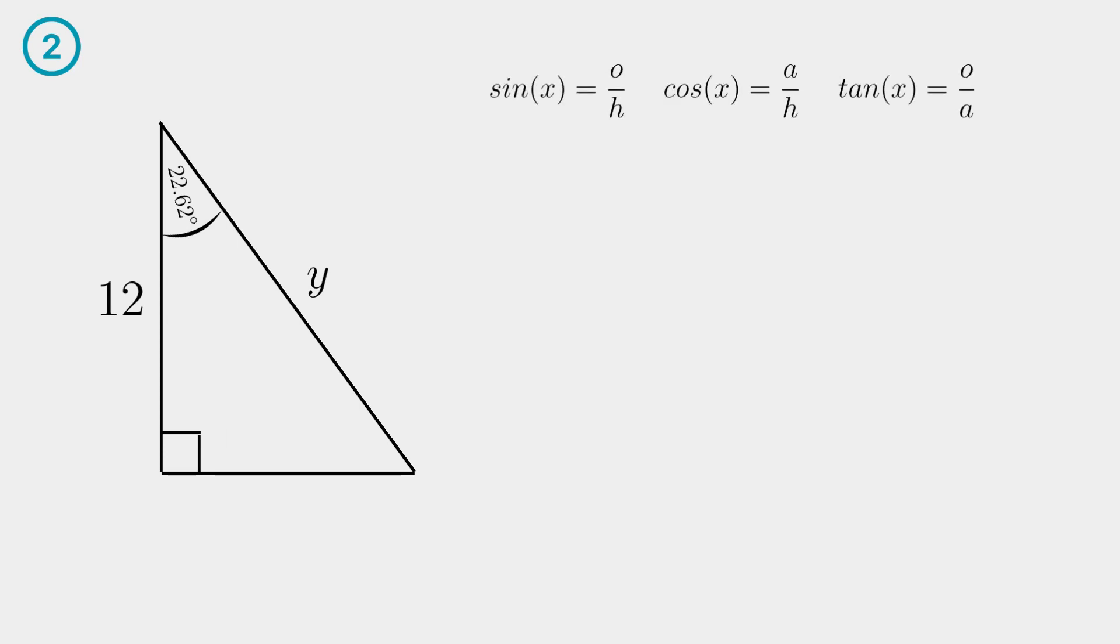Second example. Calculate the side length Y. We have a right angle triangle so we can use the three basic trig functions. The side adjacent to the twenty two point six two degrees angle is twelve and the hypotenuse is Y.